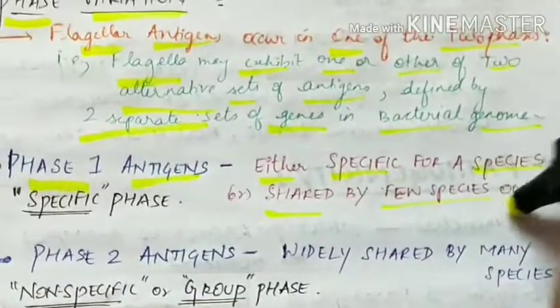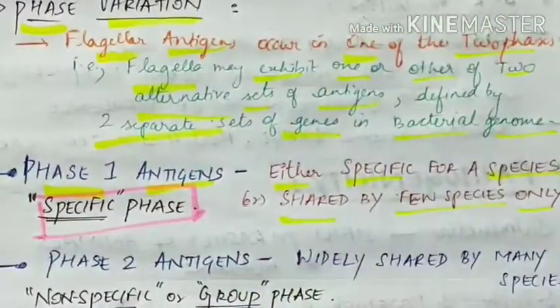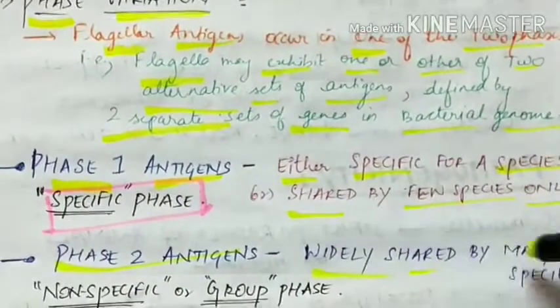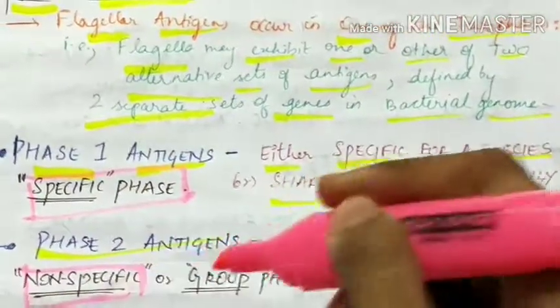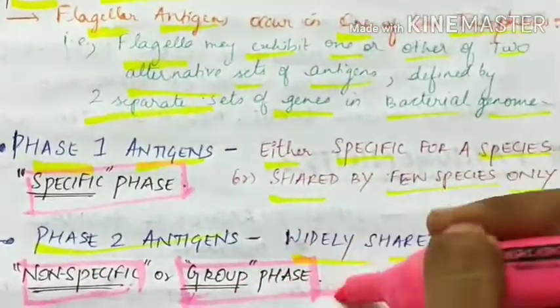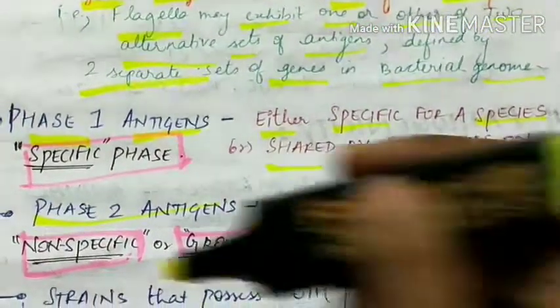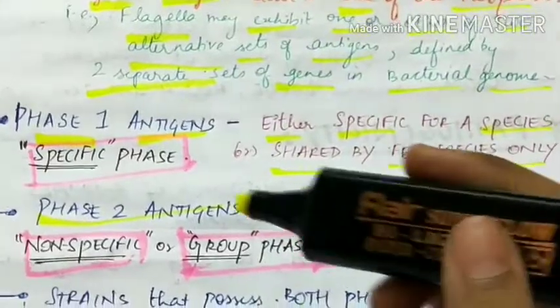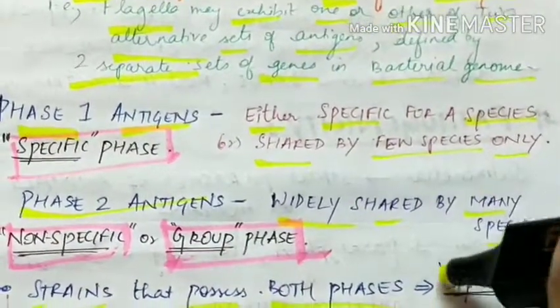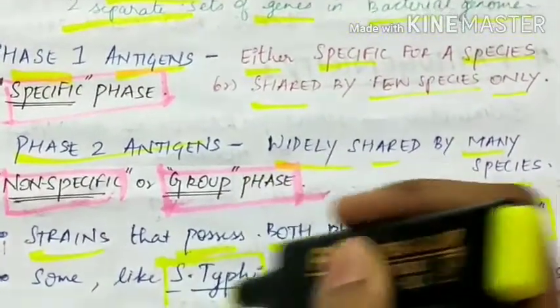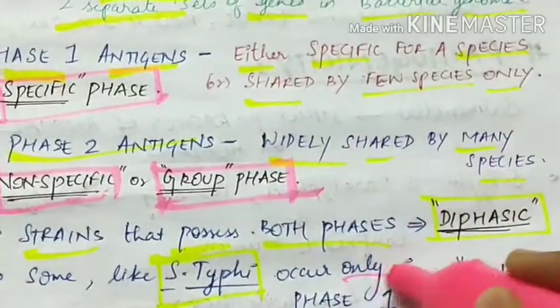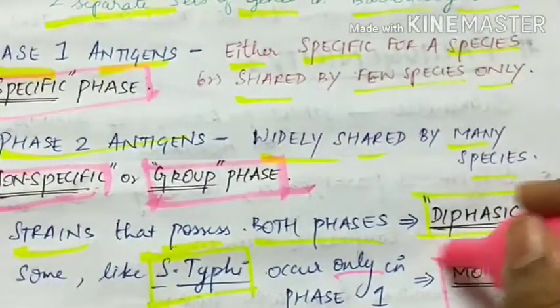The next is phase two antigens, which are widely shared by many species. So this phase two is called as non-specific or group phase. Some strains can possess both the phases - specific phase as well as group phase - and some like Salmonella typhi occur only in one phase, so they are called as monophasic strains.